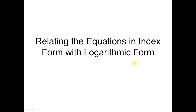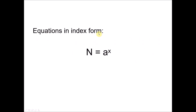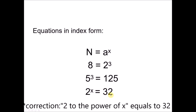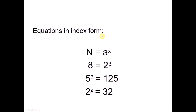Before we look at what is logarithmic form, we look at equations in index form first, which we already learned in Form 3. The equation generally is n equals to a to the power of x. For example, 8 equals to 2 to the power of 3, or 5 to the power of 3 equals to 125, and 2 to the power of x equals to 32, where x is an unknown. All three are examples of equations in index form.